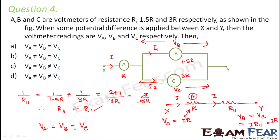Therefore the correct option is A. There is another technique you can apply during exams. Instead of solving the entire thing, just look at the circuit diagram. You can see that B and C are in parallel, which means the potential difference across B and C would be the same. So the options which say VB is not equal to VC get ruled out — options C and D are not the right answer.